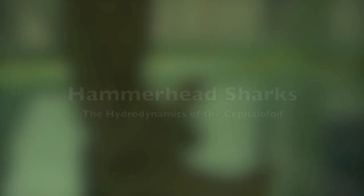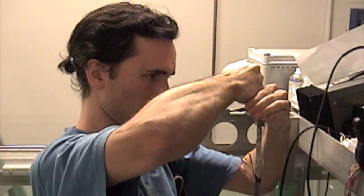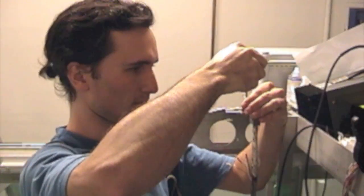The hammerhead shark is easily one of the weirdest looking animals in the world. Julien Barros, a French ocean engineer at Florida Atlantic University, has set out to quantify the hydrodynamic performance of the cephalofoil, a fancy word for the shark's unique foil-like head.